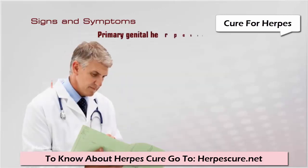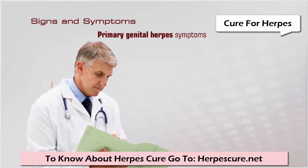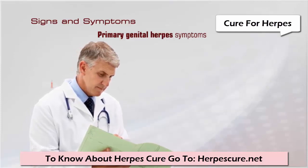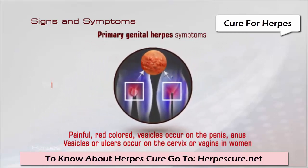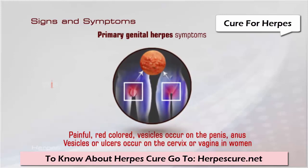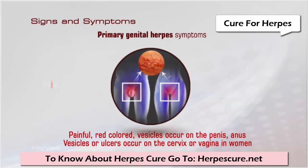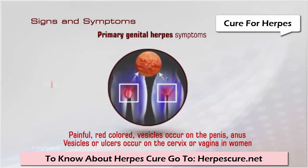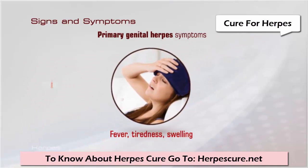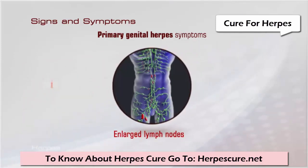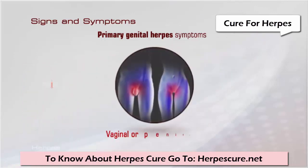Primary genital herpes symptoms usually last for two to three weeks. In men, painful red vesicles occur on the penis, anus, or the perineum, and may ulcerate. In women, vesicles or ulcers occur on the cervix, and painful vesicles occur on the genitals, vagina, and the buttocks. Other symptoms include fever, tiredness, swelling due to water accumulation, enlarged lymph nodes, and vaginal or penile discharge.